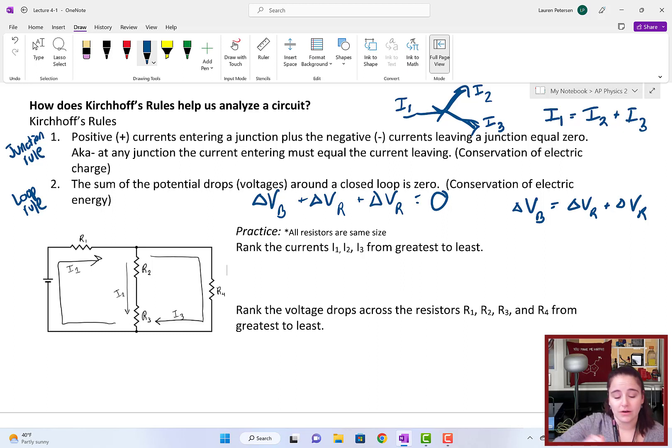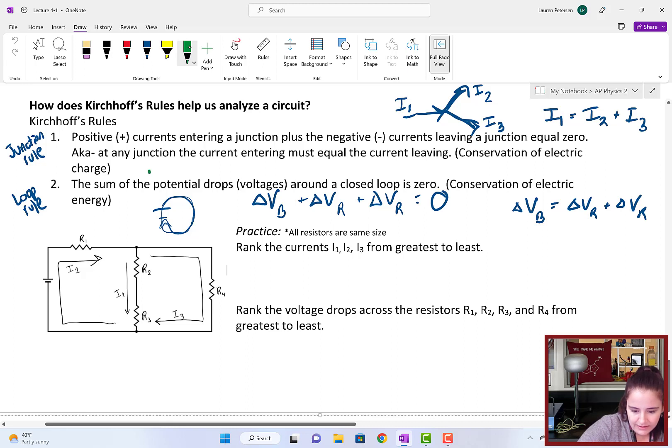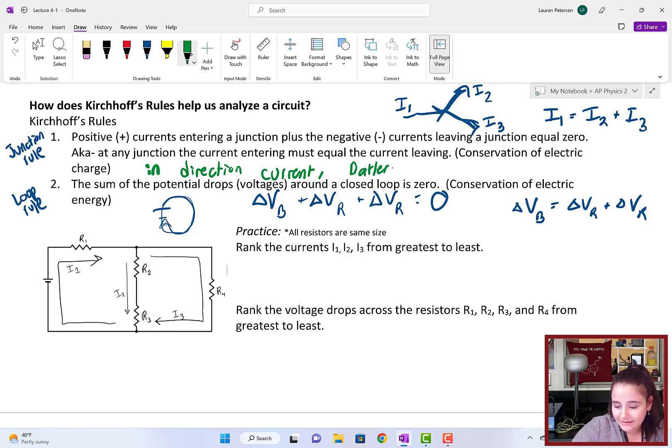For these, if you go through a battery, going in the direction of current, then batteries will have positive changes in voltage and resistors will have negative changes in voltage. Where if you're going in the opposite direction of current, then you would flip those. Batteries would drop the voltage and resistors would add voltage.